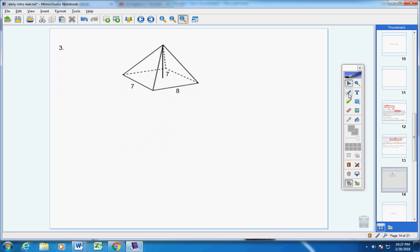Okay, same thing with a pyramid. It's one-third area of the base times the height. So what is your base? It's a rectangle. How do you find the area of a rectangle? Length times width. 8 times 7, so the area of the base is 56. And the height is 7 right here. So with your calculator, you can take 56 times 7, and you will get 392.